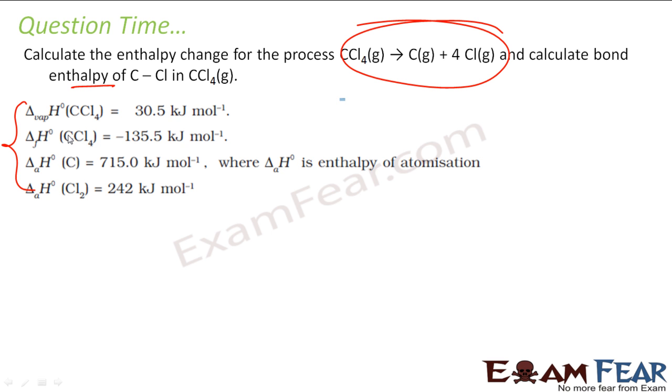Vaporization of CCl4 means you have CCl4 in liquid, you make it to CCl4 in gas, and delta H is this. Formation of CCl4 means you have C, you have 2 Cl2 molecules, gives this in liquid. This is H.